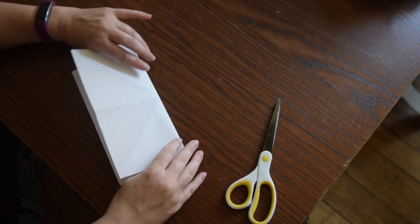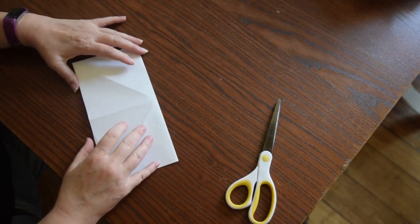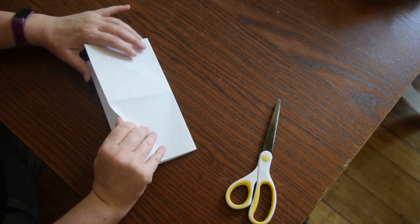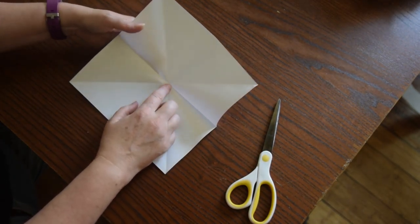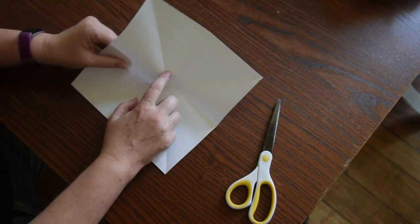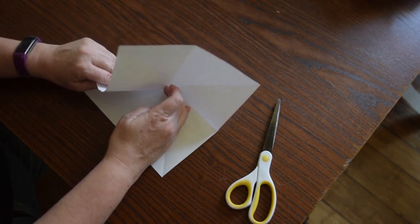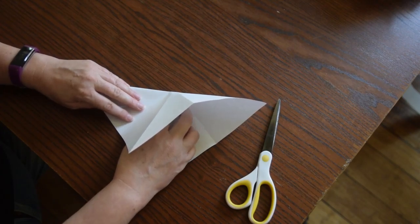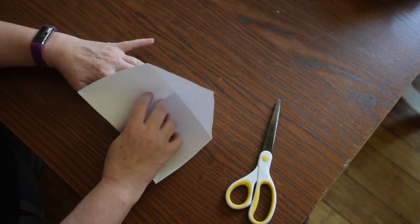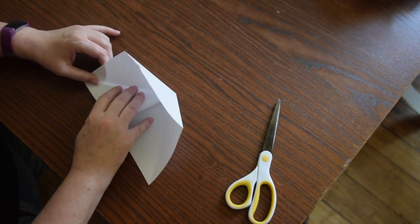So we've got kind of a star shape creases. Now we're going to fold it in half. And here's the little bit of a tricky part. You're going to take the center and fold this crease in to the center and then fold it out.